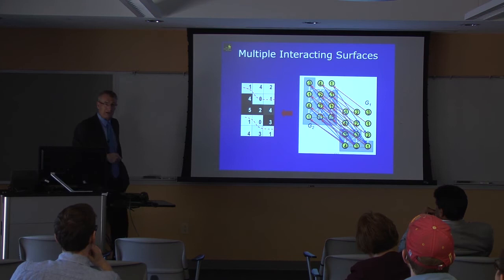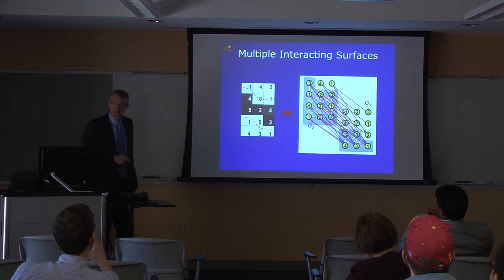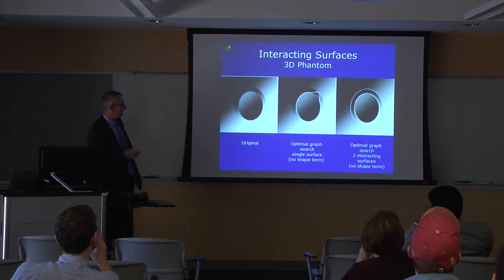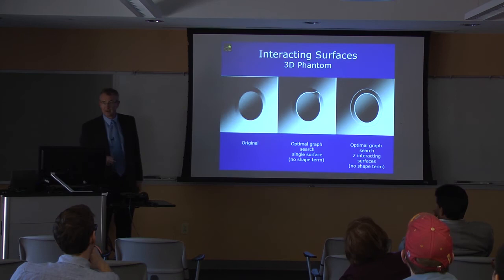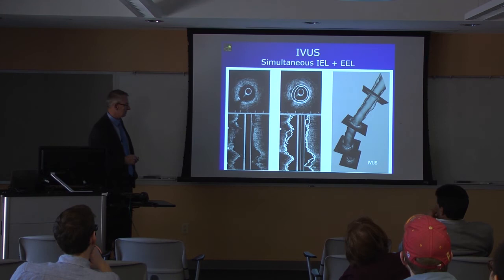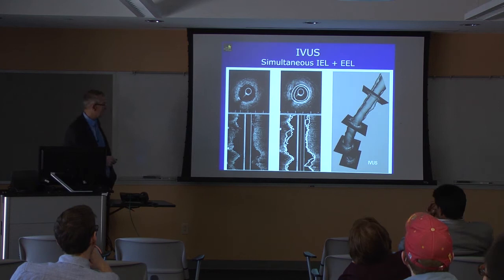If I can do it for two surfaces, I can add one more graph and link it for three surfaces. Suddenly I have a way to do multi-surface simultaneous optimal segmentation. Applied to a 3D phantom, when looking for double surfaces I will never make the mistake of the single-surface approach — I end up with consistent thickness between those two borders. We can apply this to, for example, simultaneous inside/outside wall segmentation of intravascular ultrasound images in 3D, or to an excised iliac artery by MR to get the inside wall, plaque, and different layers including the media.